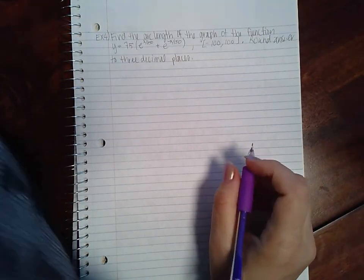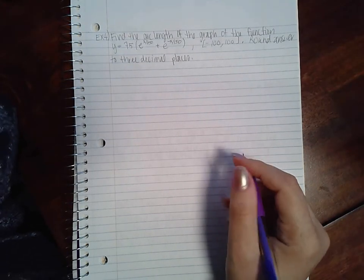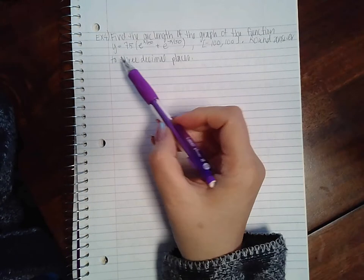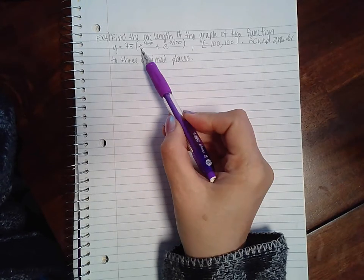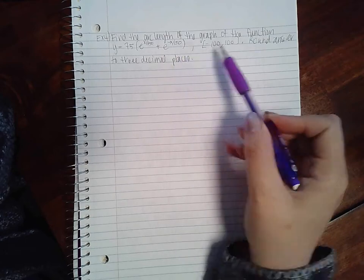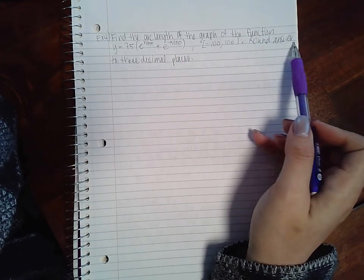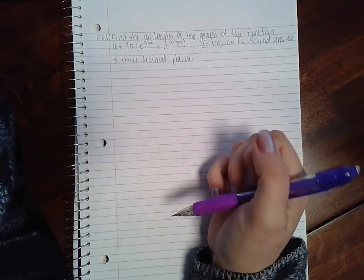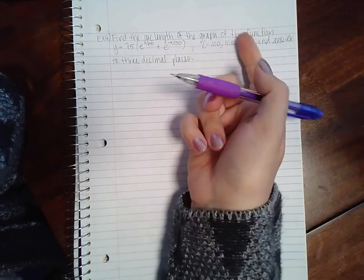This video is arc length example four. It says find the arc length of the graph of the function y equals 65 times e to the x over 150 plus e to the negative x over 150 on the interval negative 100 to 100. Round your answer to three decimal places. So we are given the function and the interval.